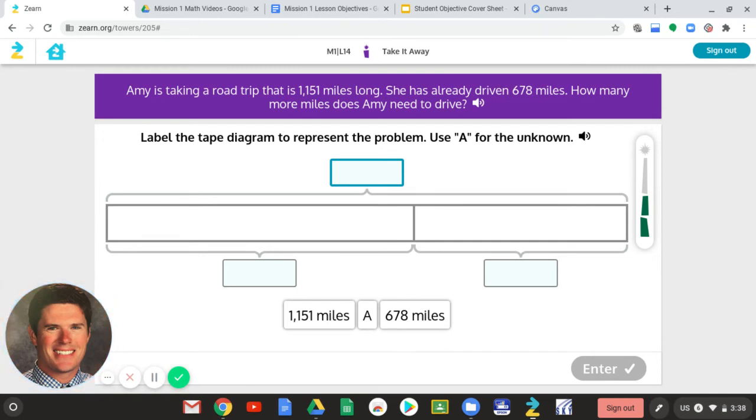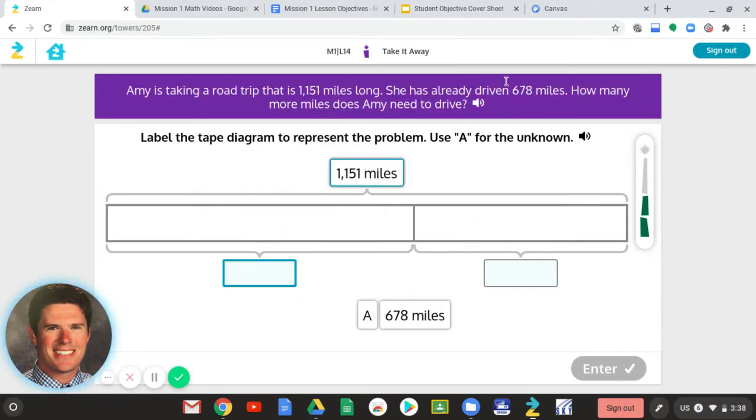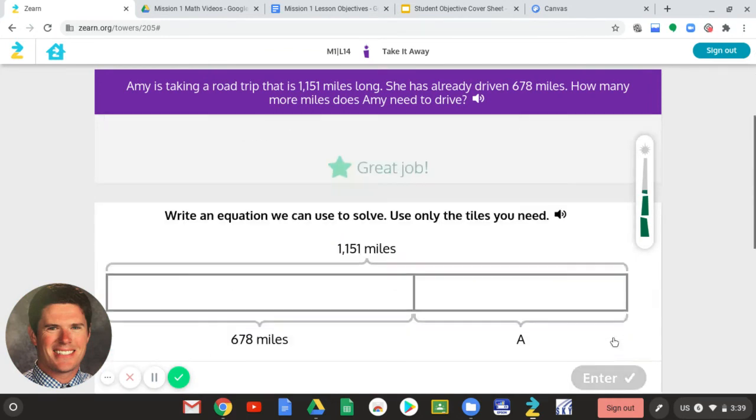Label the tape diagram to represent the problem. Use A for the unknown. So what do we know here? We know the total of the trip. It's 1,151 miles long. And we know that Amy has already driven 678 miles. And we are trying to figure out how much more does she need to drive? So I know my total. So if I have this tape diagram, remember this top number with the bracket for both of them is the total. I know the total. The total trip is 1,151. I know Amy, she's already driven 678. So I know she's driven part of it. And then how many more miles does Amy need to drive? We need to figure out how much more she needs to drive to get that total of 1,151. So that's our variable. We're going to call it A. The variable means our unknown, the number we're trying to find.